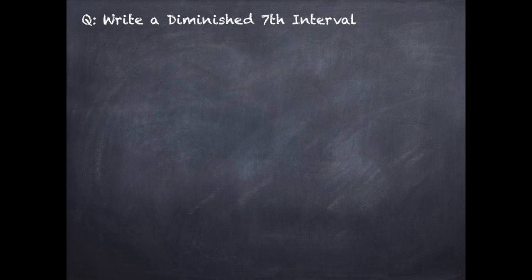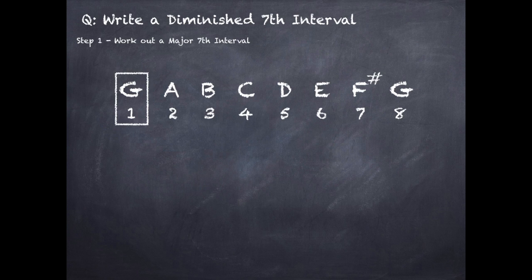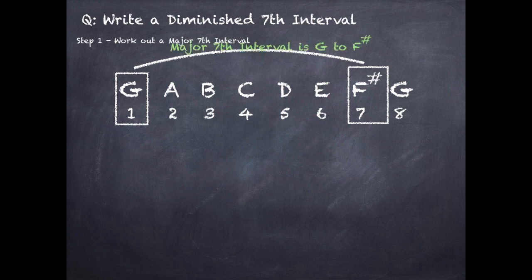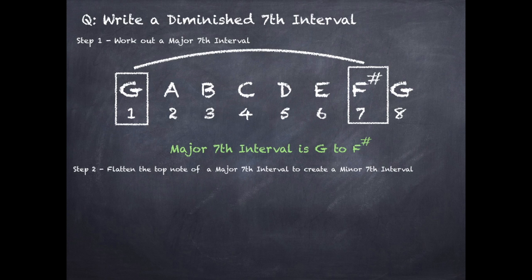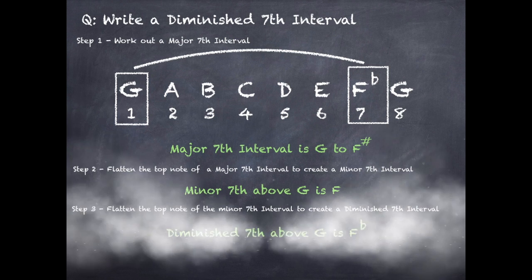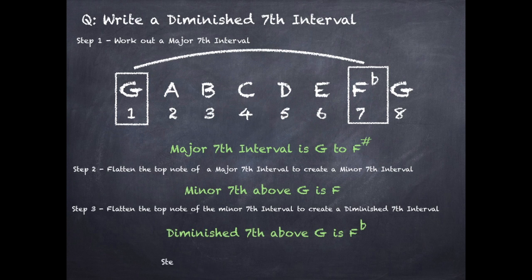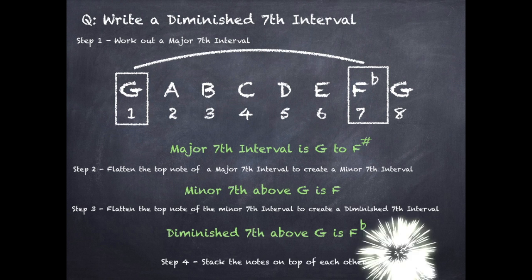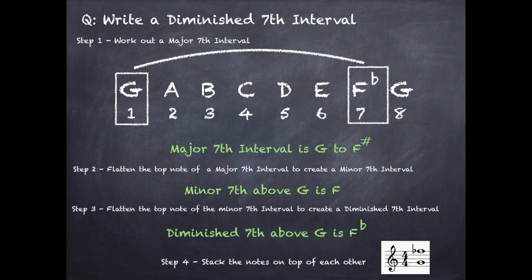To write a diminished seventh interval, step 1: work out a major seventh interval. We go from the first note of the G major scale, which is G, to the seventh note, which is F sharp — major seventh is G to F sharp. Step 2: convert this to a minor interval by flattening the top note — F sharp becomes F, minor seventh is G to F. Step 3: flatten the top note of the minor seventh to create the diminished seventh — F becomes F flat. Diminished seventh is G to F flat. Step 4: stack the notes on the stave. It's a four-step process.